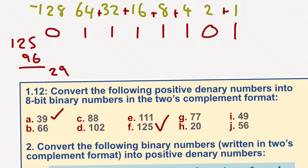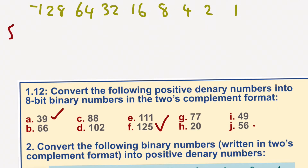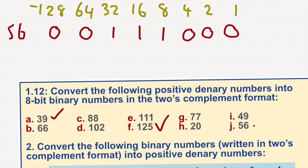And finally, 56 - nice and easy. Obviously we've got none of those, none of those, 1 of those, 1 of those - that gives us 48 - then 1 of those, 1 of those, 1 of those, 1 of those. There we go, using 2's complement. This most significant bit is there to confuse you - don't worry, it's redundant at this moment in time, certainly for these numbers.